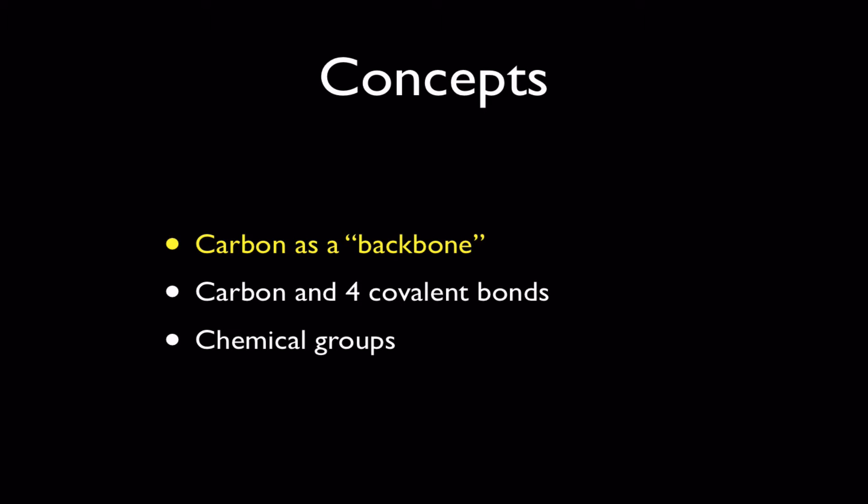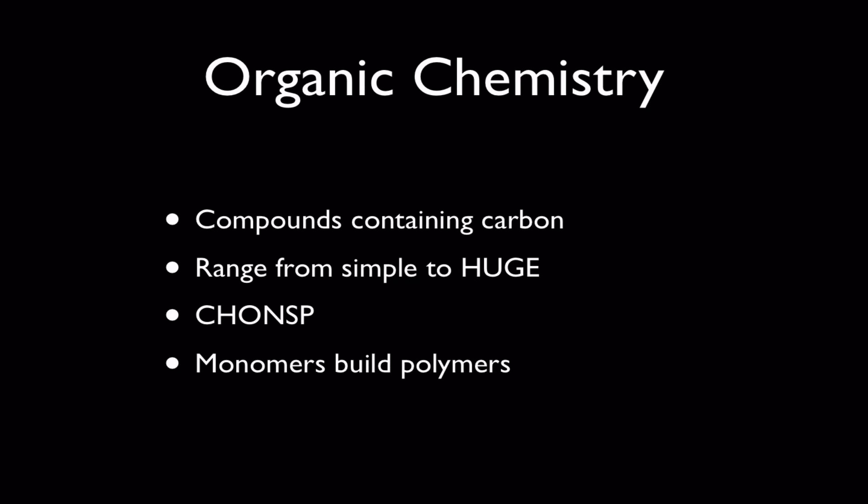The first idea I want to talk about today is the idea of carbon as a backbone atom. It's the central idea to organic chemistry in that you can combine carbons into chains, rings, and all sorts of combinations of these to produce a vast number of organic compounds. Organic compounds all contain carbon and they range from very small things like methane up to very large molecules like proteins and DNA.